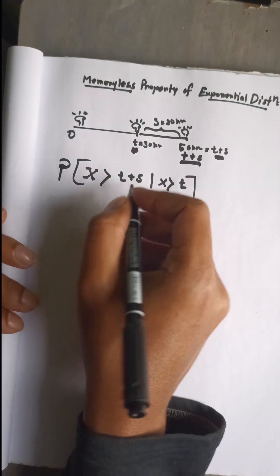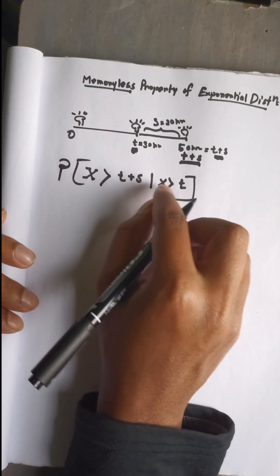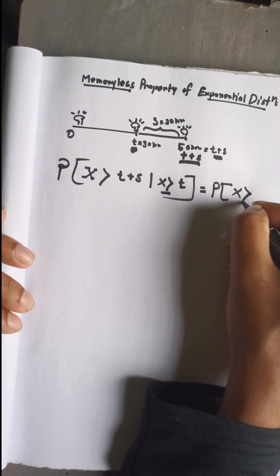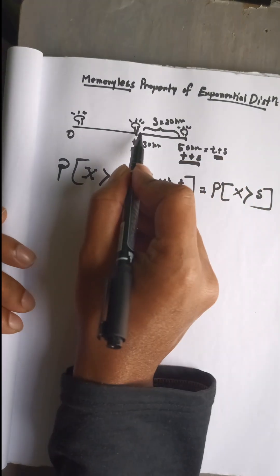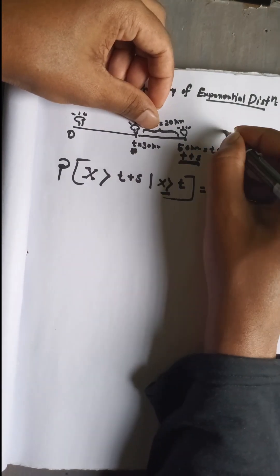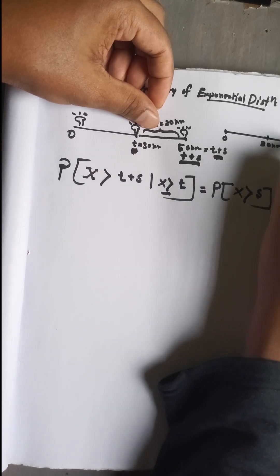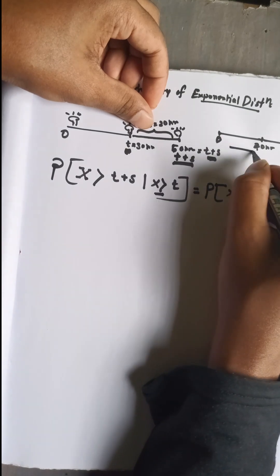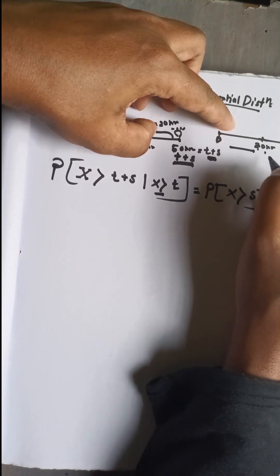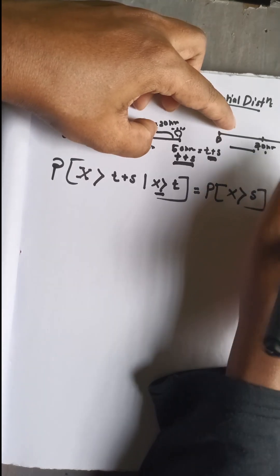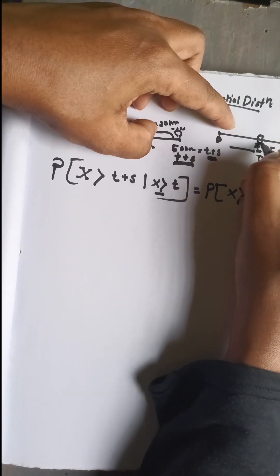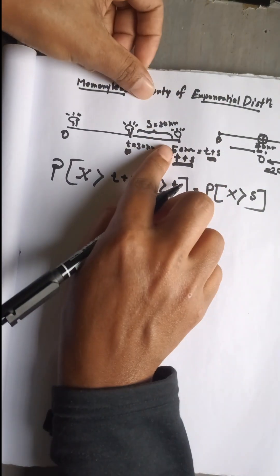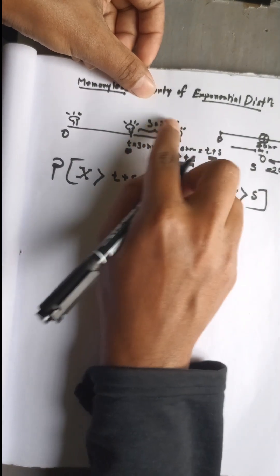It comes out that the model does not memorize that the light bulb already survived up to t hours. So the output probability depends only on x greater than s. Here is why: it counts like this — suppose from 0 to 30 hours, then 30 to 50 hours. When I condition on having already survived 30 hours and ask about surviving an extra 20 hours, it takes 30 as the new 0, begins from that point, and the range is 20 hours — which I denote as s.